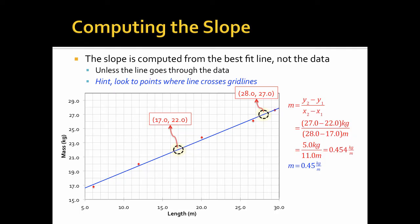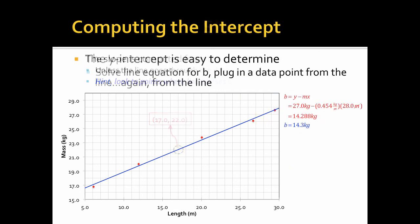With this value in hand, I can now find the intercept by rearranging the equation for a line. B is equal to y minus mx. Choosing any data point I want, I think this is the most accurate one. So I'm going to choose this guy right here, the 28, 27 data point. I think that's the most accurate crossing with the grid lines. And I'm just going to plug those in along with my slope.